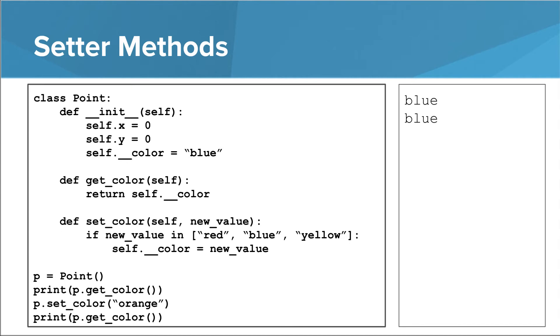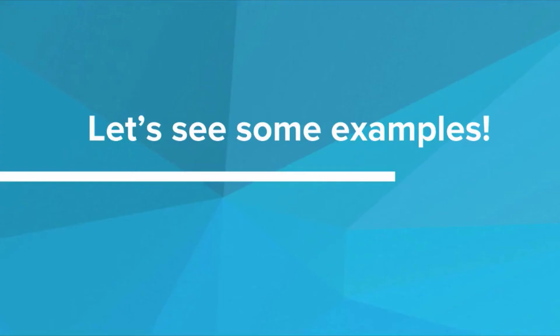So this is how we use hidden attributes. You simply put two underscores in front of the attribute name, and you can write getter and setter methods to expose this hidden attribute to the outside world. Let's see some real examples of this.